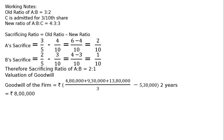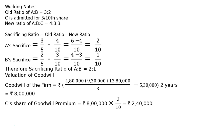Years' purchase is 2 years. Average profit minus Rs. 5,30,000 (normal profit), multiplied by 2 years' purchase, equals Rs. 8,00,000. C's share of goodwill premium: Rs. 8,00,000 is the goodwill of the firm, and C's share is 3/10, that is equal to Rs. 2,40,000.